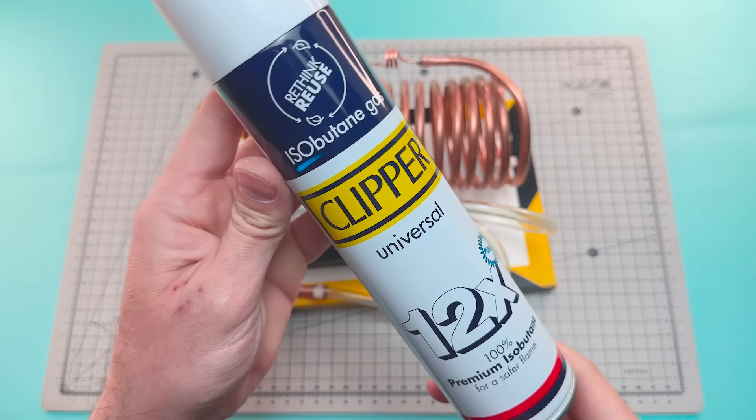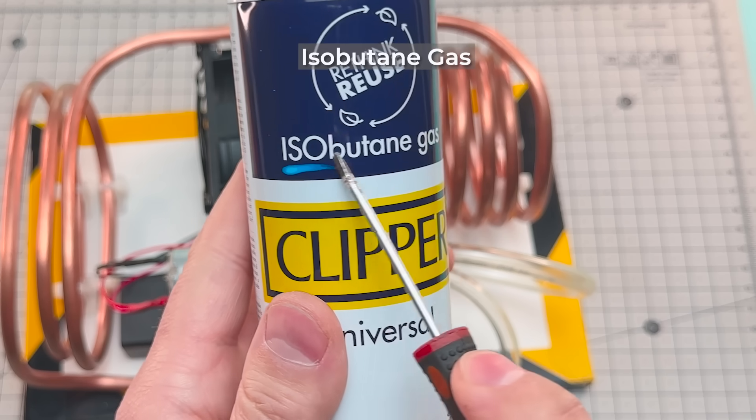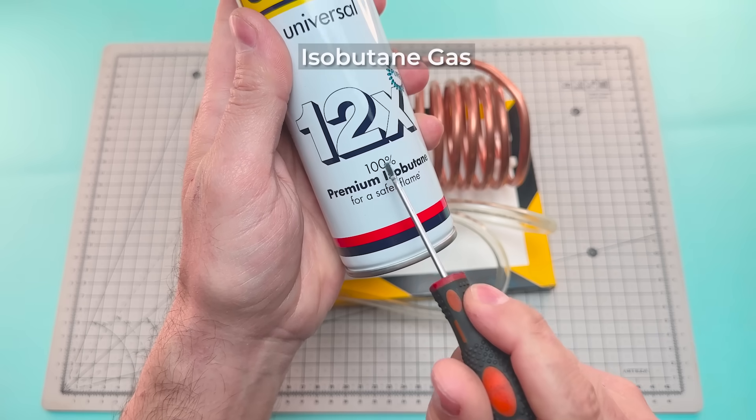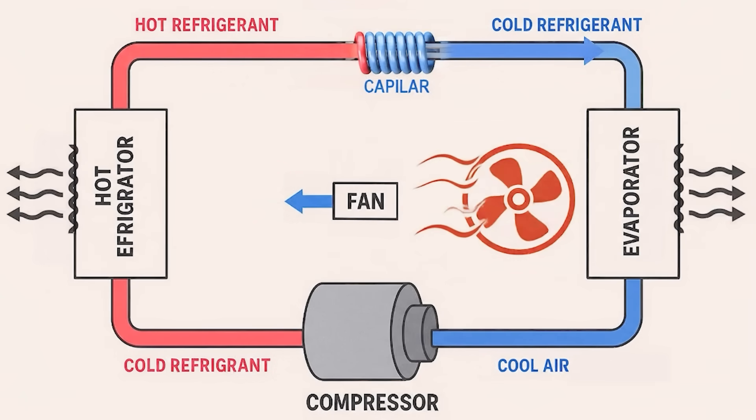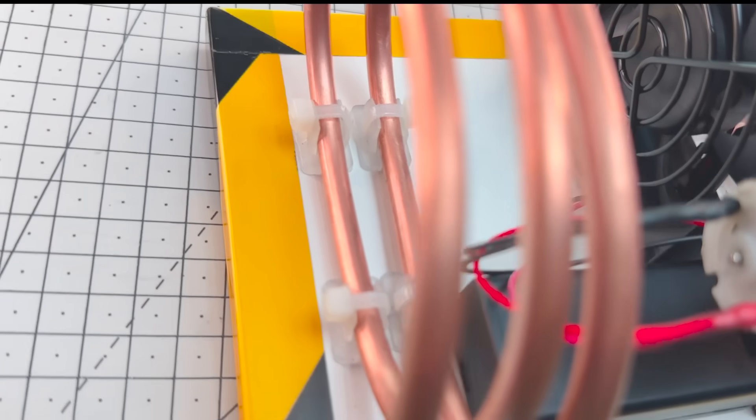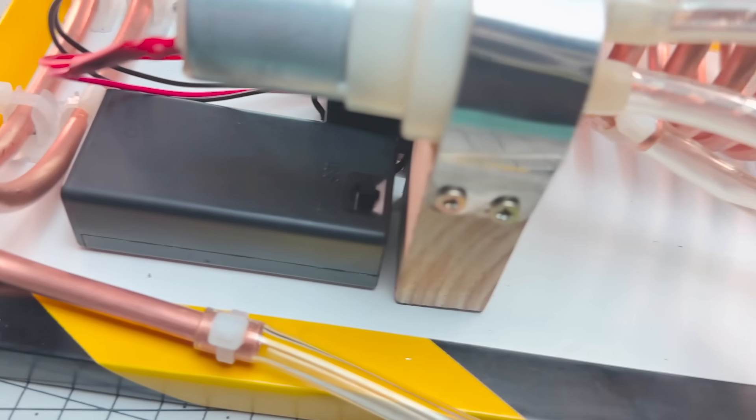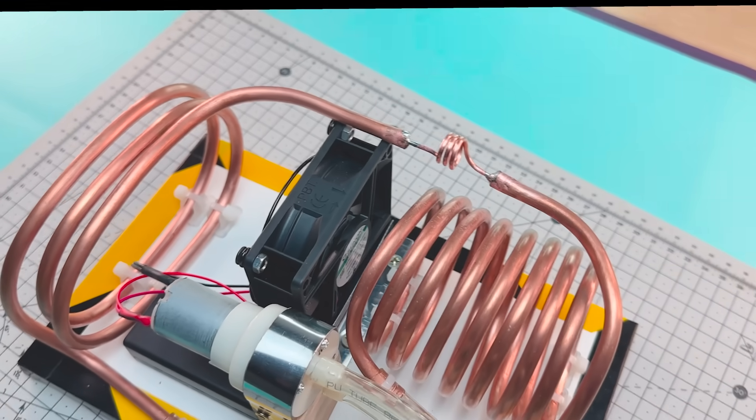Now we're going to charge our circuit with isobutane. The heart of the system is the refrigeration cycle, and although it might seem complex, it's actually based on a simple physical principle, using a gas that, when evaporating, absorbs heat from the environment. That gas is isobutane, and it's going to be our ally in turning hot air into cold air.